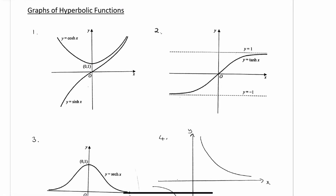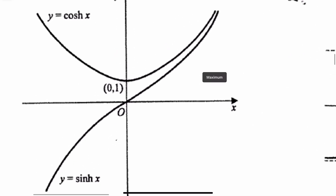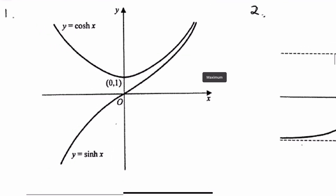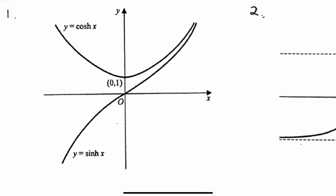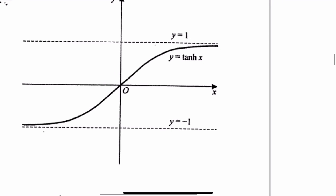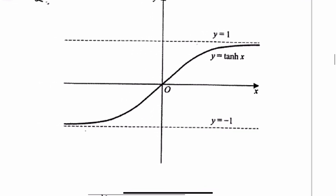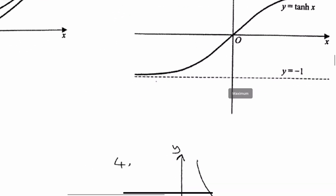We're going to look at the graphs of hyperbolic functions and then leading on to what's called the logarithmic form of inverse hyperbolic functions. The top graph is hyperbolic cosine, the bottom one is hyperbolic sine — we showed where we got these from in the last video. We also showed where we got the graph of hyperbolic tan, and it has two horizontal asymptotes: y equals 1 and y equals minus 1.